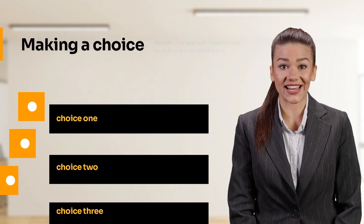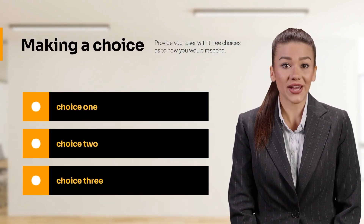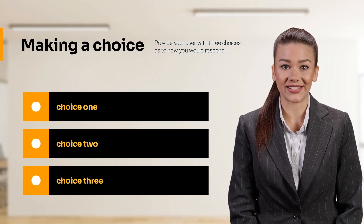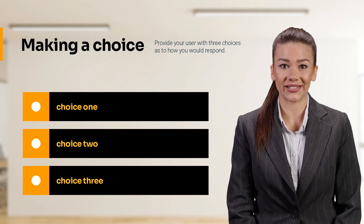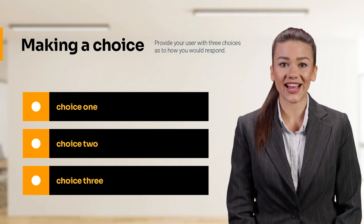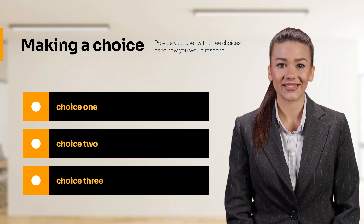Finally, we have scenarios. Scenarios are a great way to allow your user to make a choice based on the information provided to them. Have the avatar acting as a character in your narrative and use the choice buttons to allow your learner to test their knowledge. Keep an eye out for other Storyline templates that will release so that you can speed up your course building process.